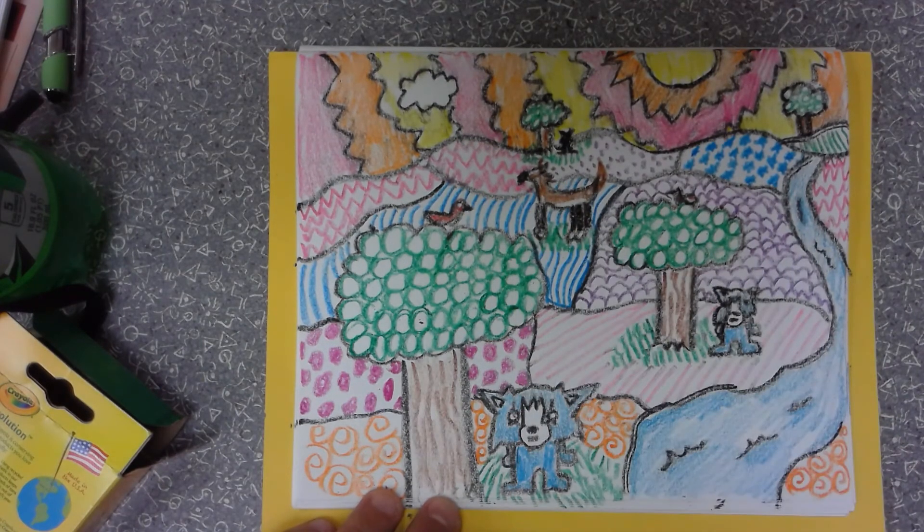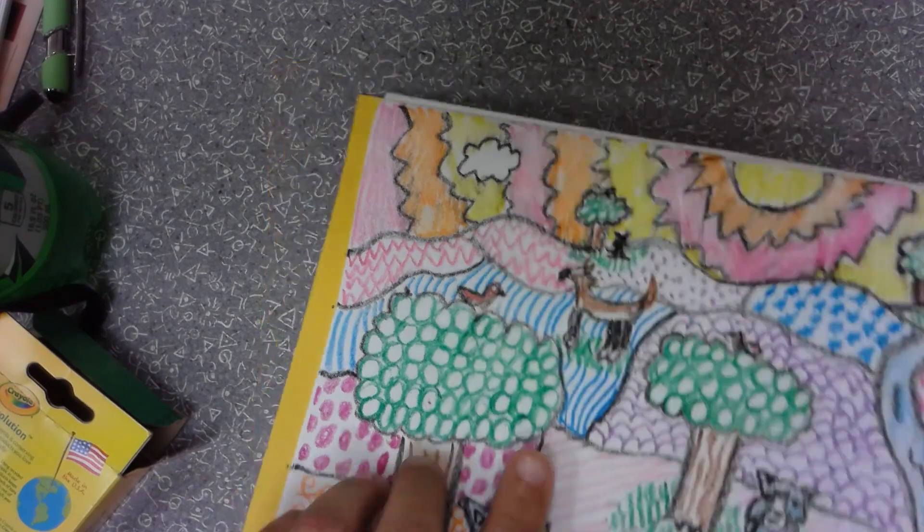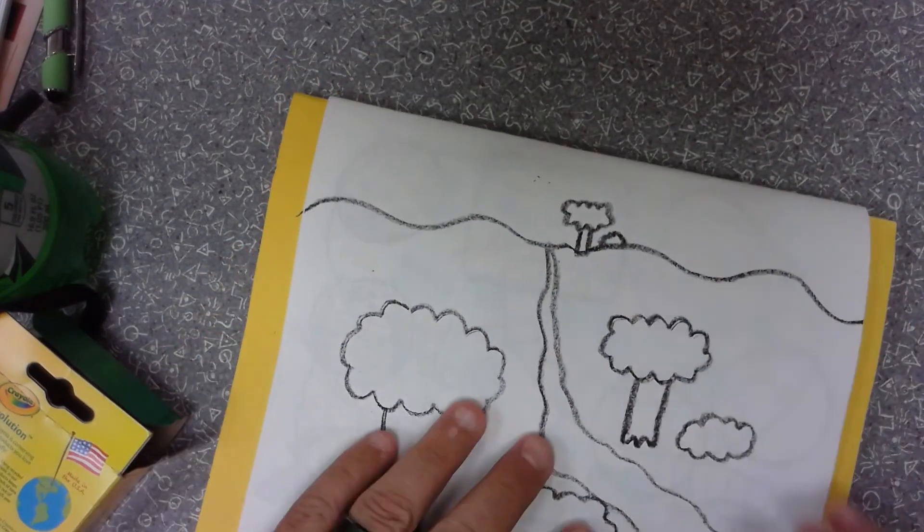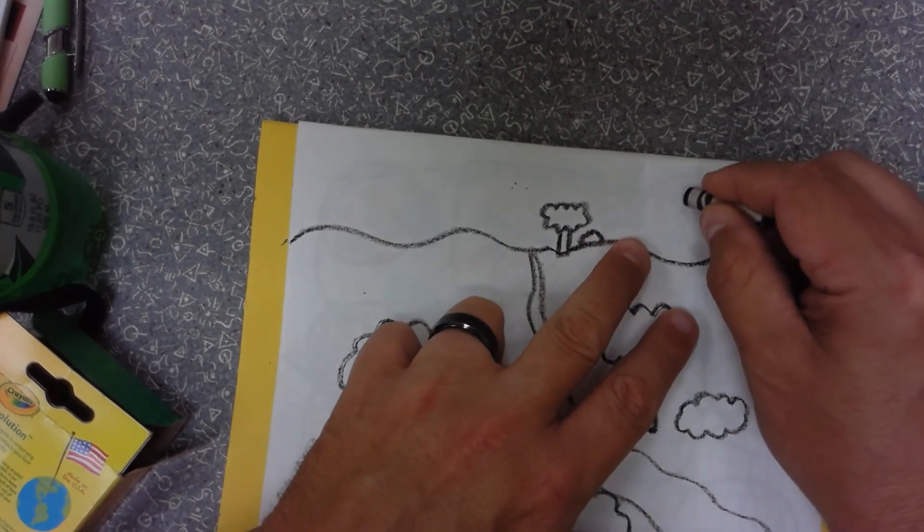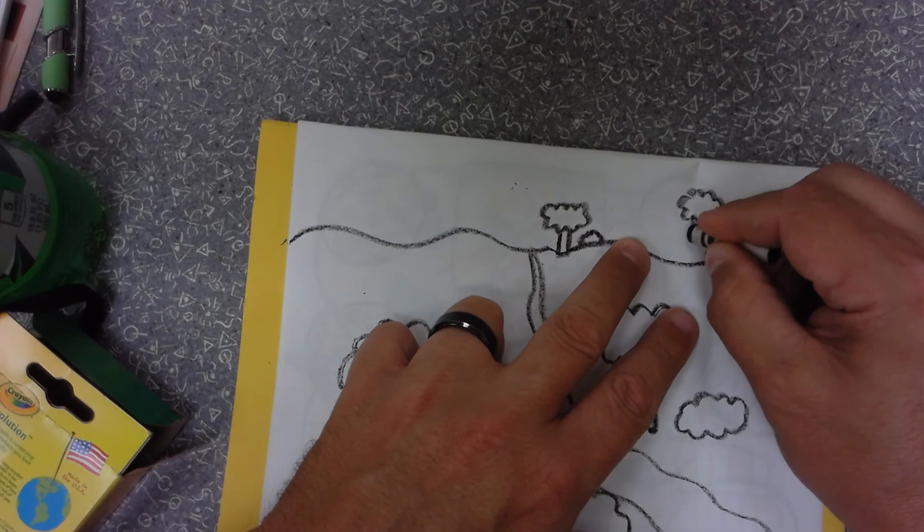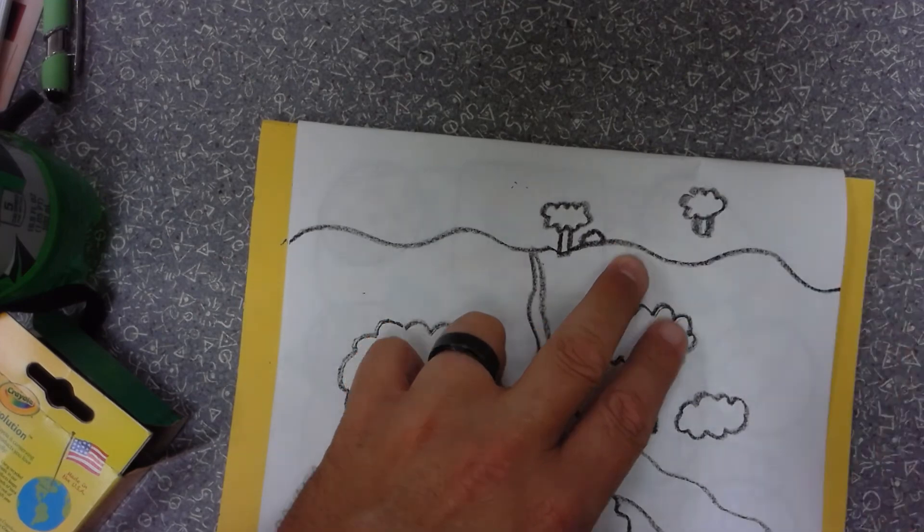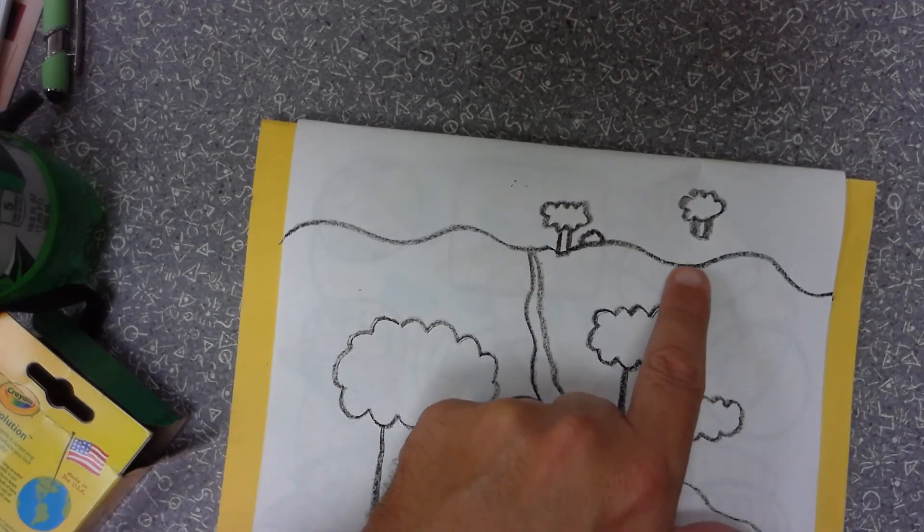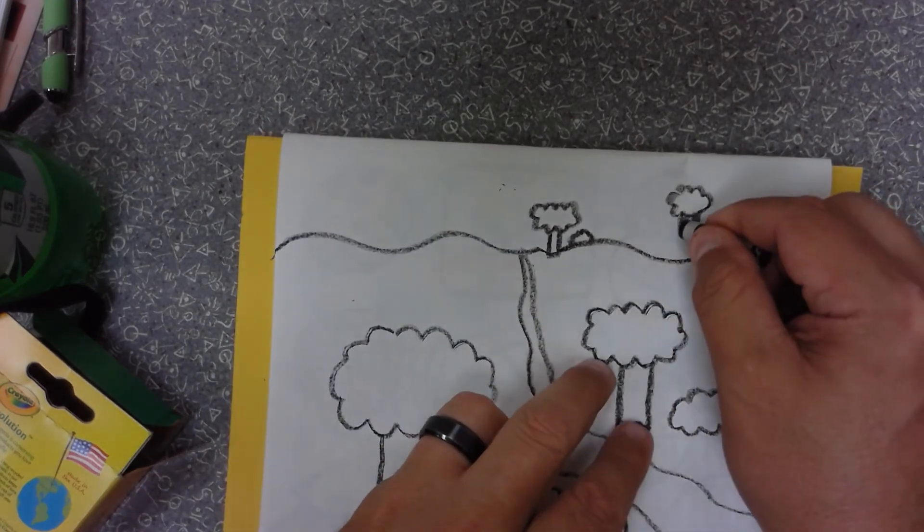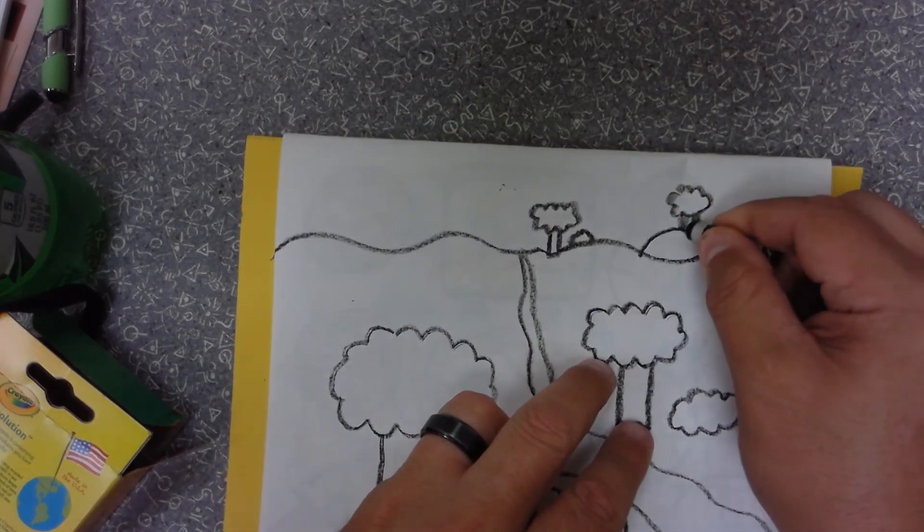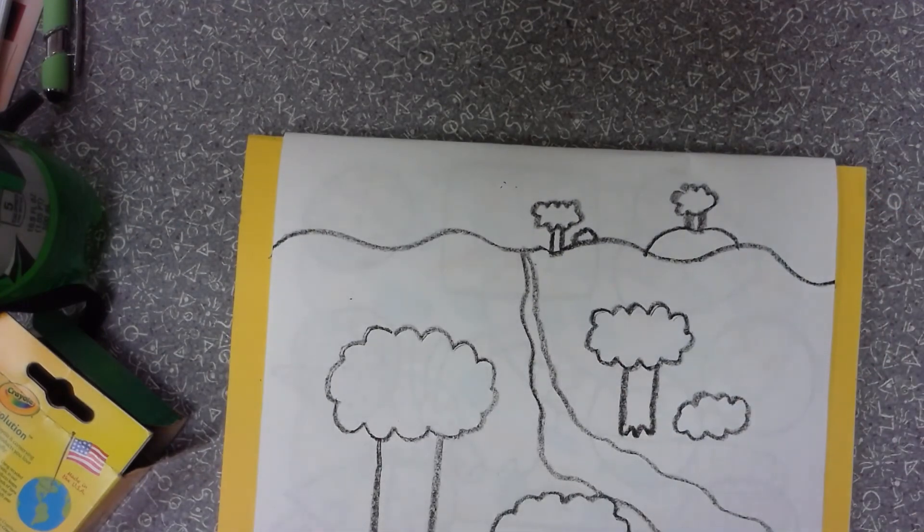One more thing before we move on: make sure if you add anything that it's not floating. If I try to add a tree above the horizon line and don't connect it, it looks like it's floating in the air because down here is the land and up here is the sky. If you accidentally do that, you can just add a hill or something that it's sitting on.